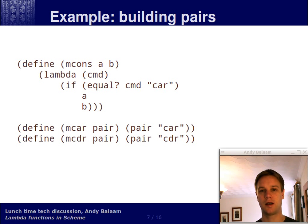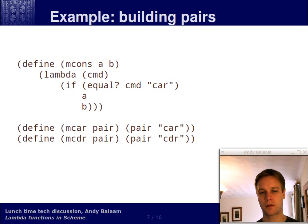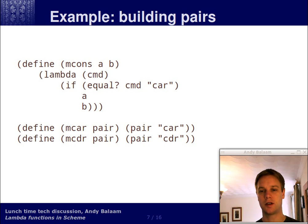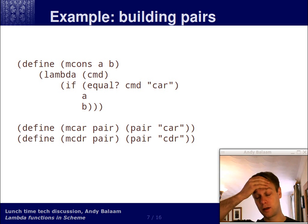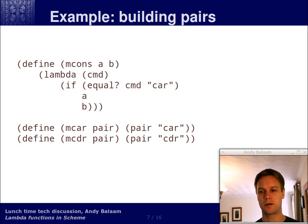Now that we've got a procedure called mcons, let's make another procedure called mcar and another called mcdr. They both take in an argument called 'pair'. We're going to assume that pair is actually a procedure, because the body of mcar and mcdr calls pair and passes in an argument of either 'car' or 'cdr'. So what we're expecting to be passed in to these bottom two procedures is the return value of that top procedure. Because the top procedure returns a procedure which takes one argument — which could be 'car' or 'cdr' — these bottom two procedures are going to call it with either 'car' or 'cdr', which means you get back either A or B.